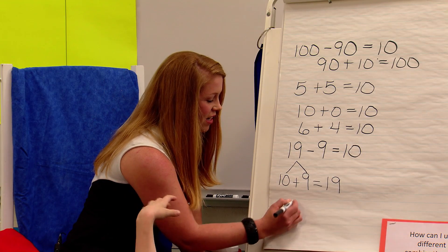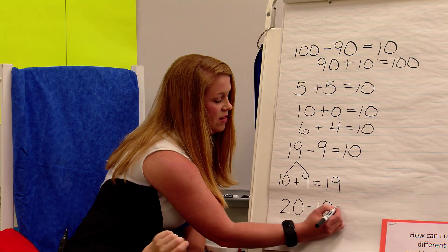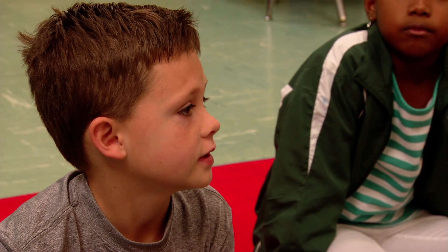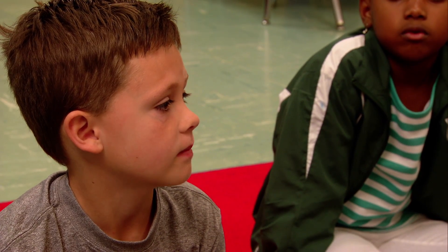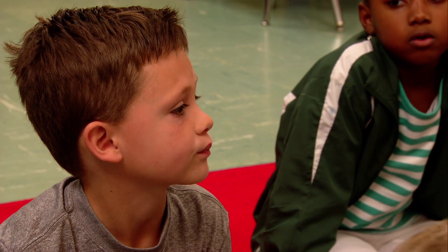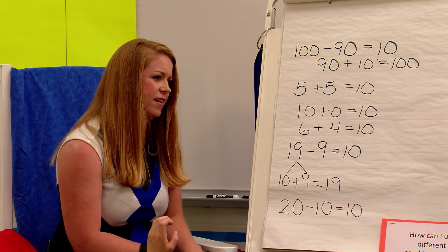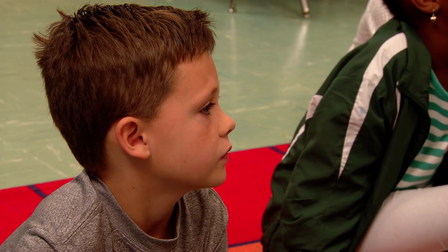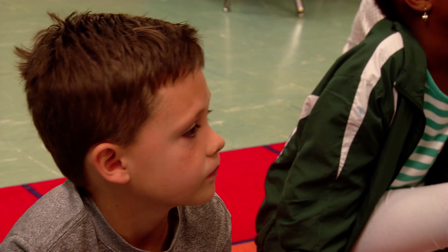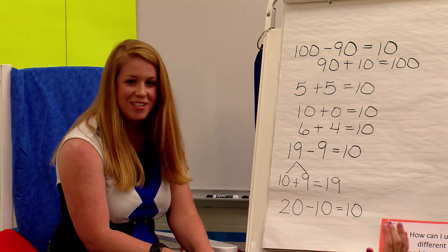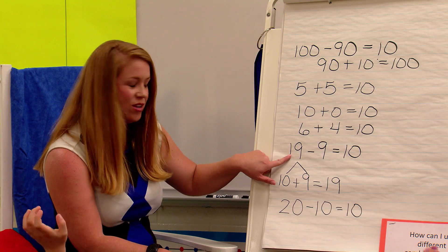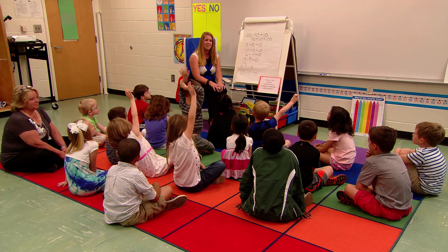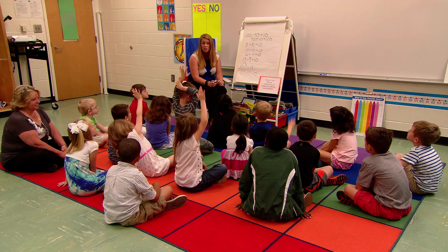20 minus 10. Very good. Blake, how did you know that 20 minus 10 is 10? 19 minus 9 is 10, so I added 20 minus 10 equals 10. So what did you do to these numbers to get 20 minus 10? I added one more. You added one more to 19 to make 20, and one more to 9 to make 10, and you knew that 20 minus 10 equals 10. Good job. You guys are doing a great job.